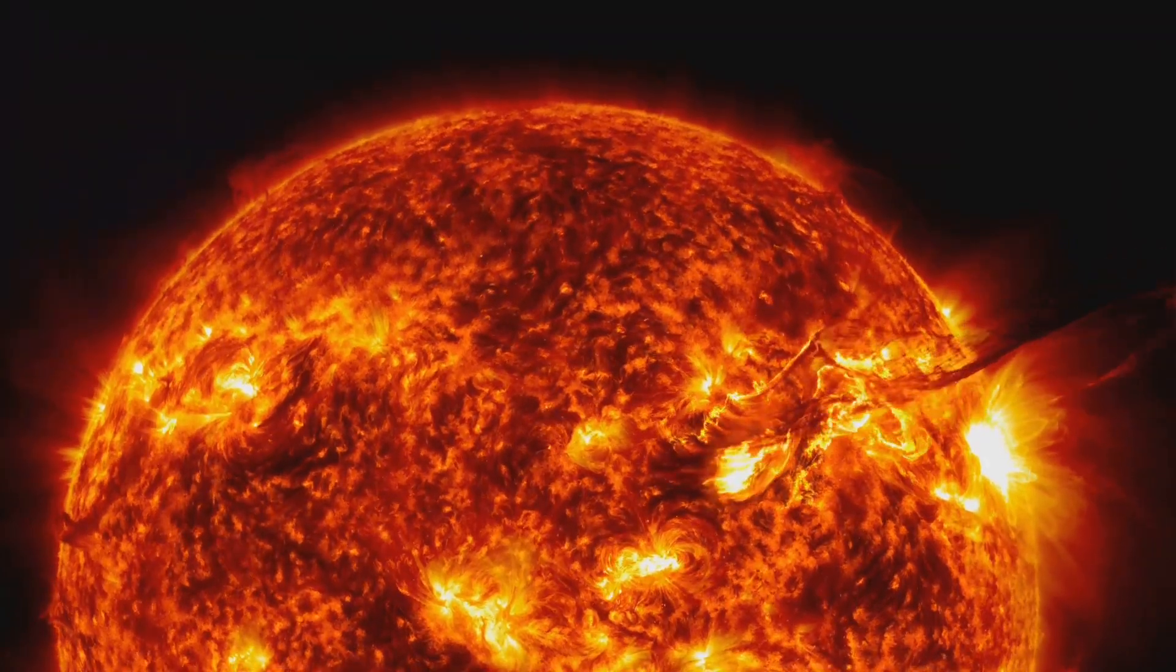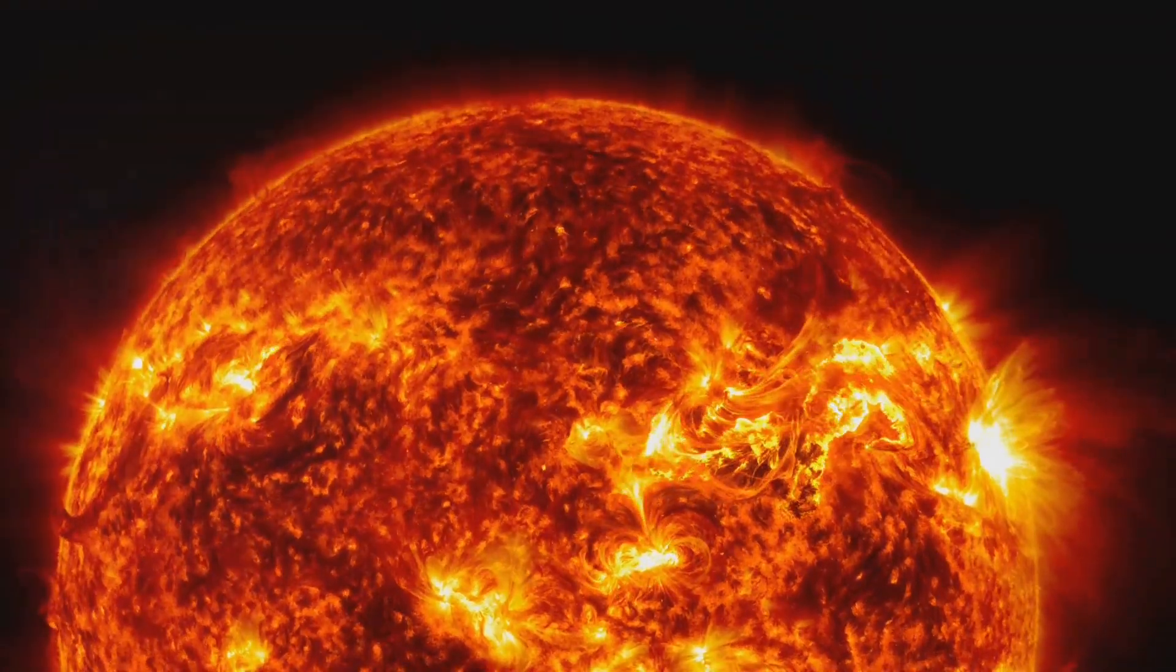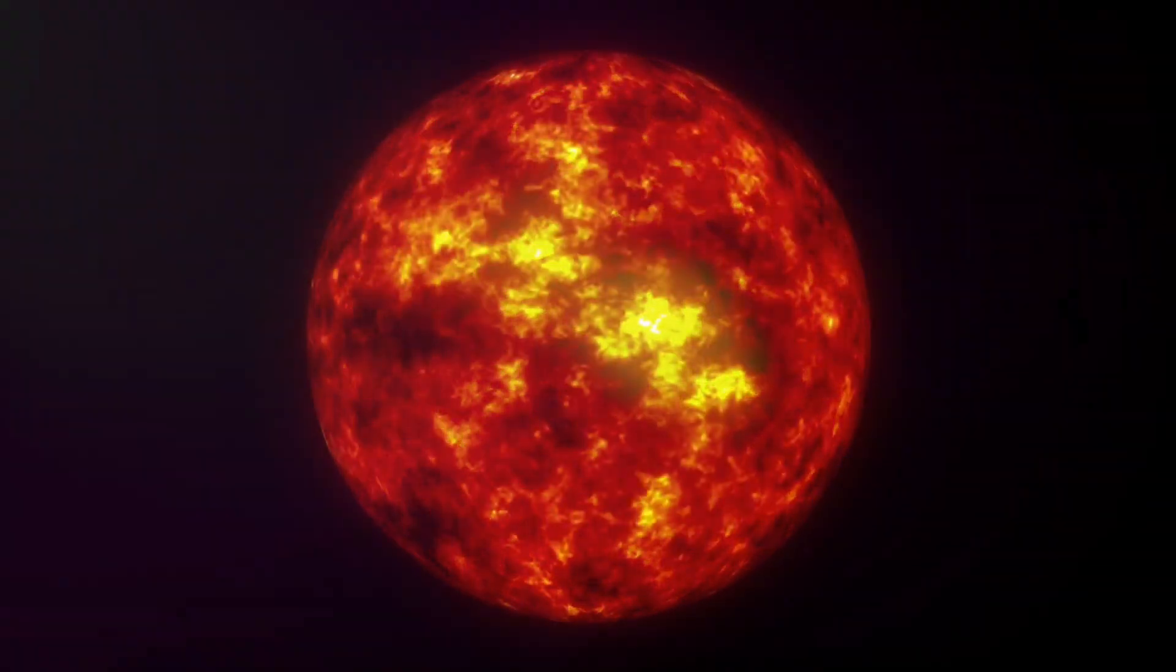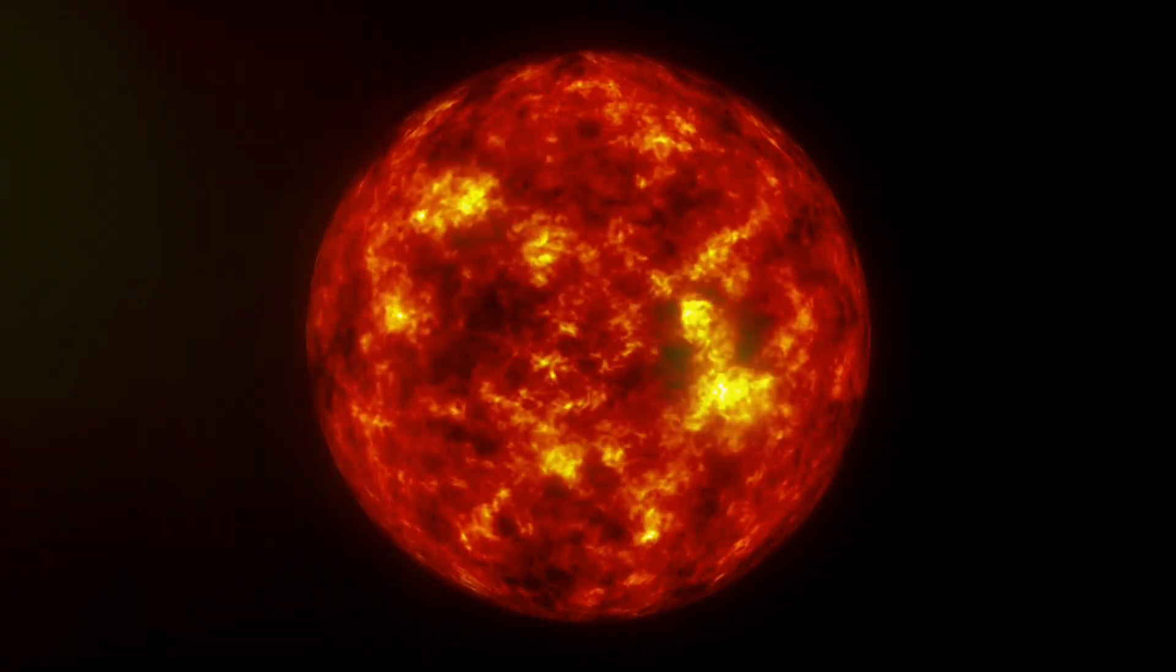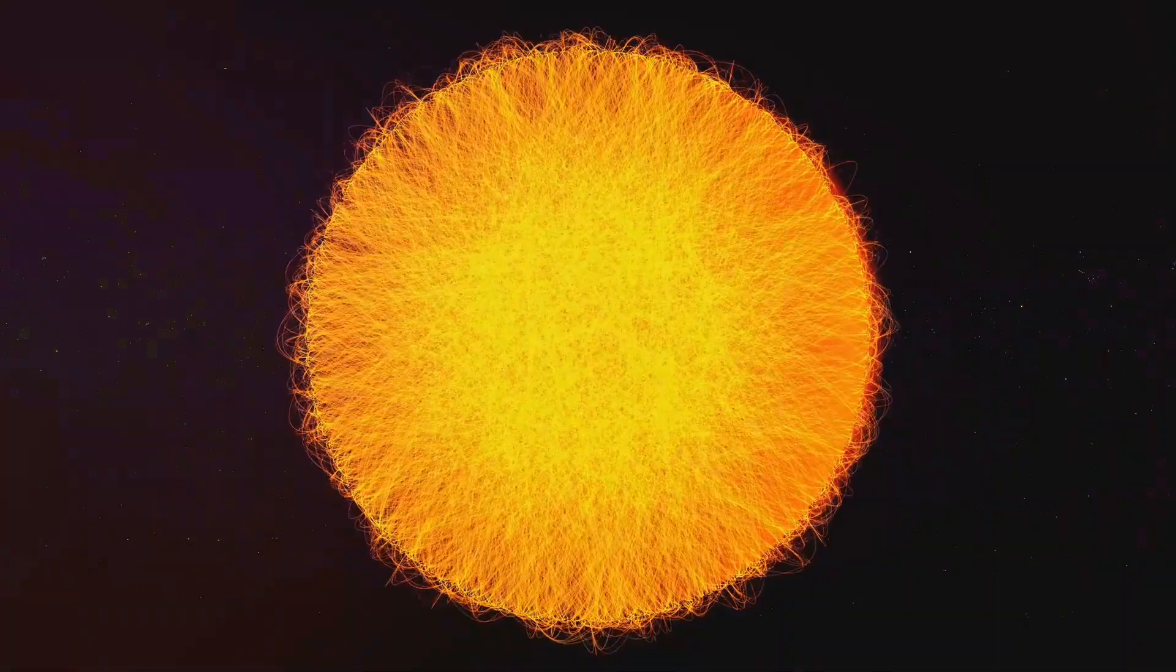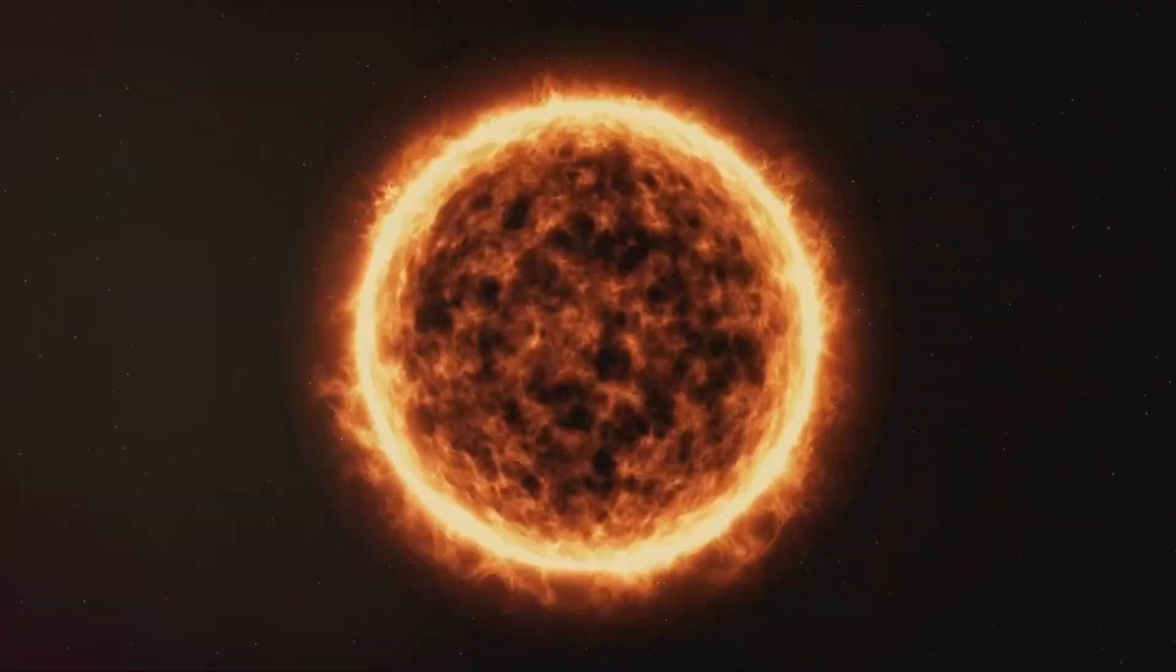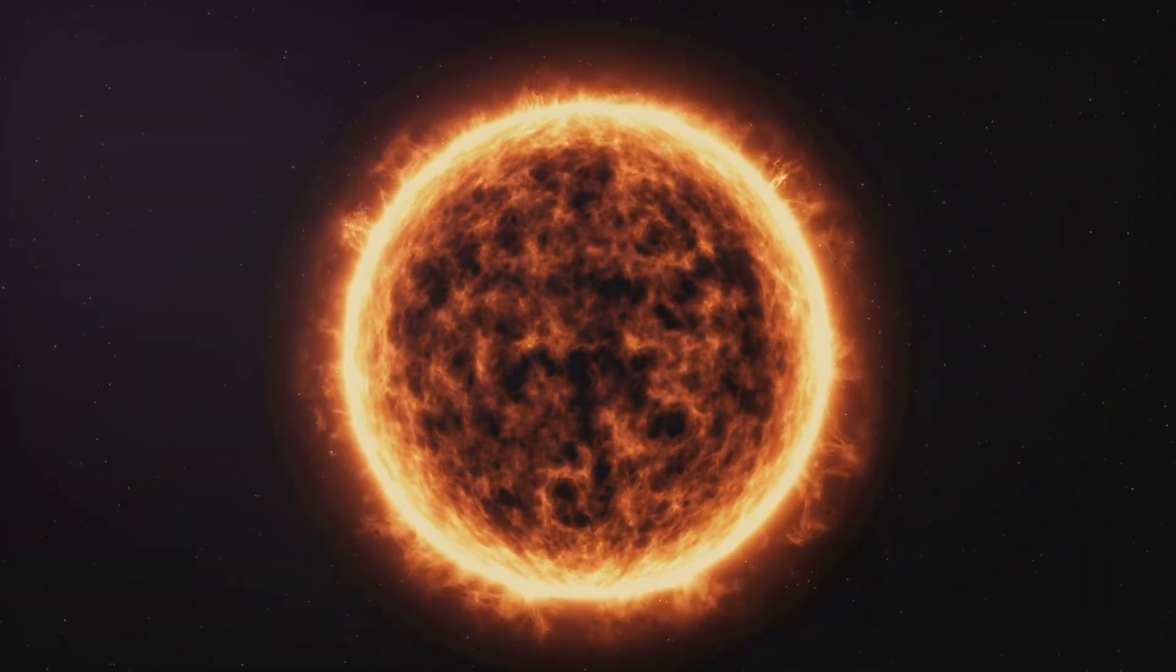However, the sun's surface is far from a simple, uniform layer. It's a churning, swirling sea of plasma marked by dark sunspots and brilliant flares. It's a place where magnetic fields twist and snap, releasing huge amounts of energy. And it's a place that, despite our best efforts, remains shrouded in mystery.